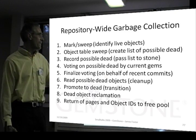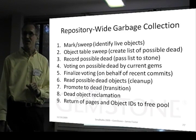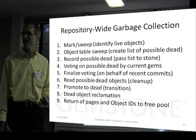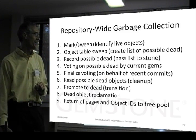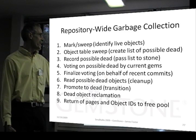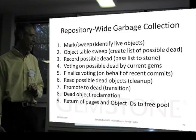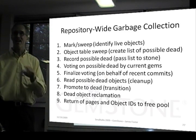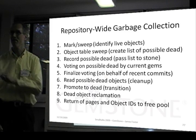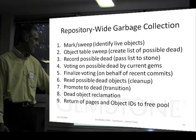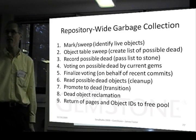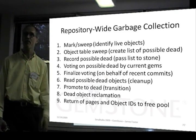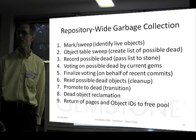Get a list of possible dead and pass that list to the stone. The stone asks the currently logged-in gems to report on whether they're referencing any of the possible dead. Finalize voting on behalf of commits. Read the possible dead, clean up, promote to dead. Start dead object reclamation — you can't do it instantaneously, we have to do it a piece at a time, object at a time. Then return of pages and object IDs to the free pool, after which the object ID can be reused, but there are steps that have to happen before that.